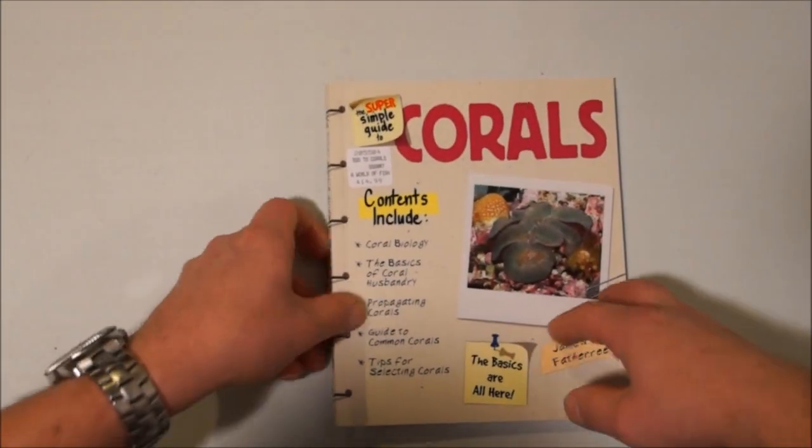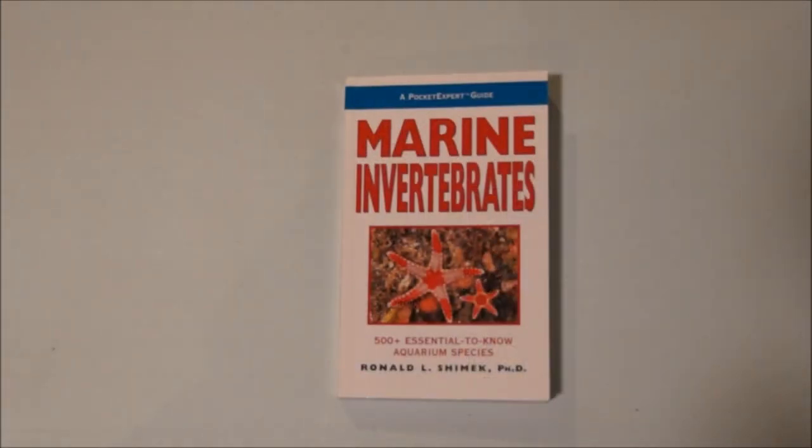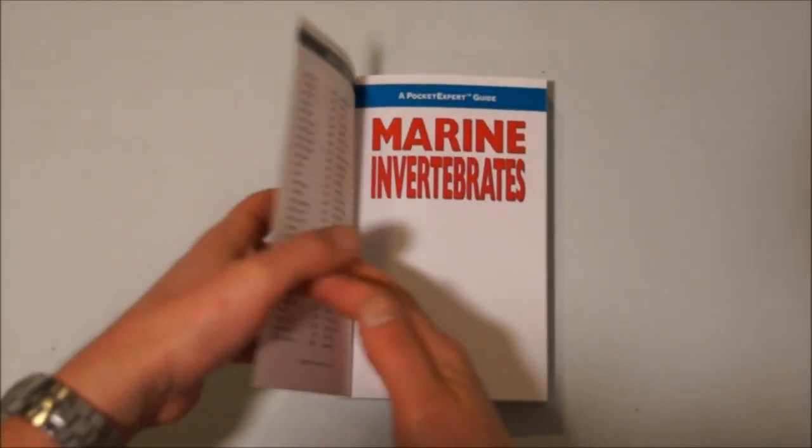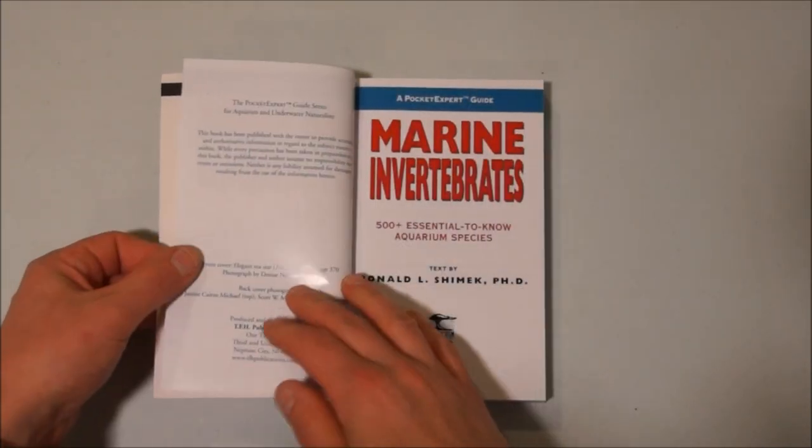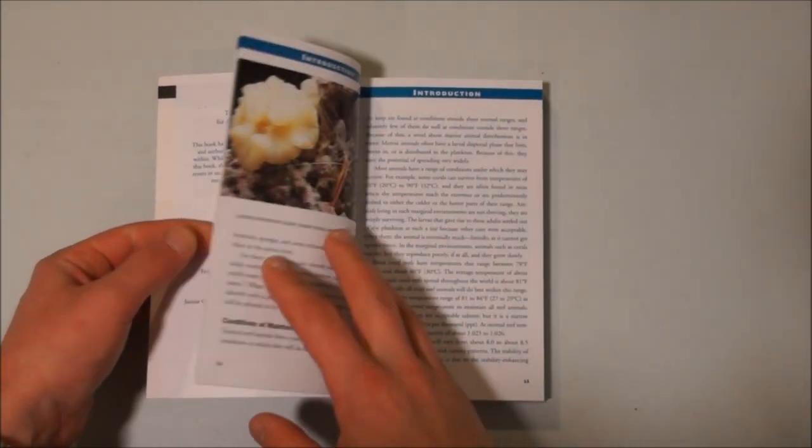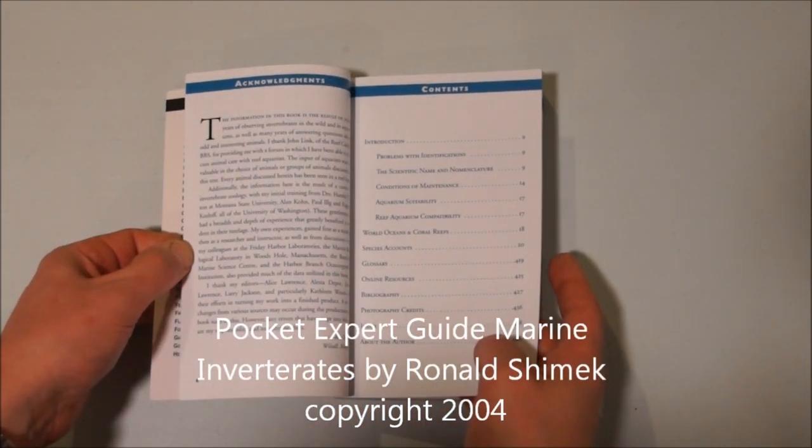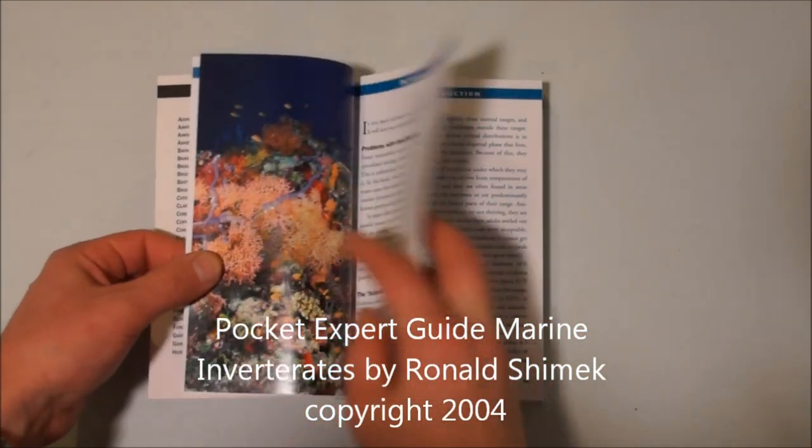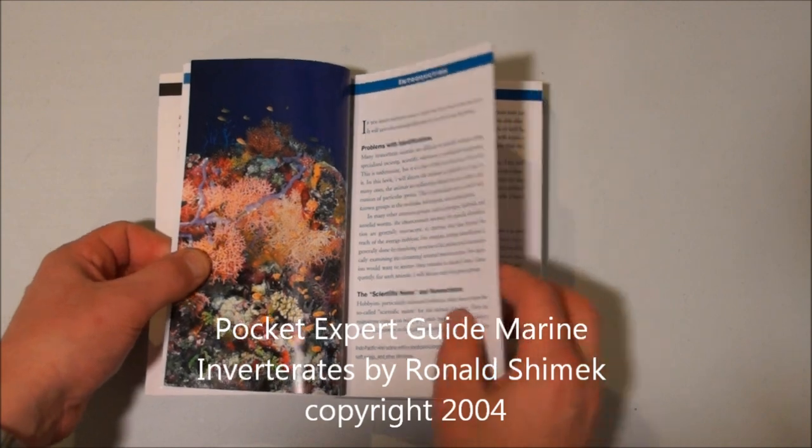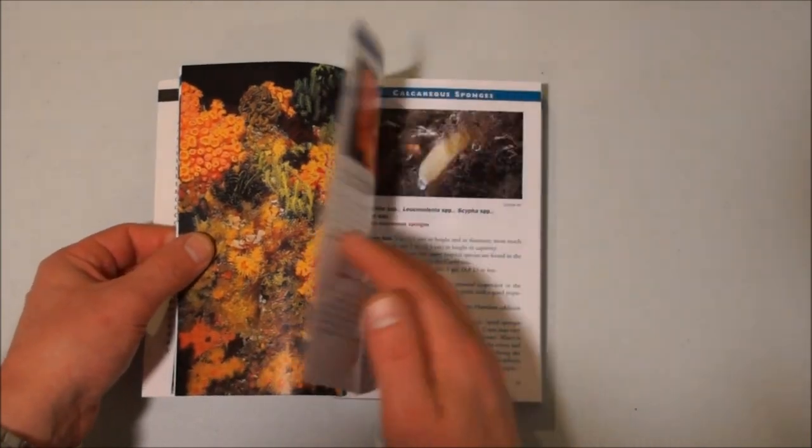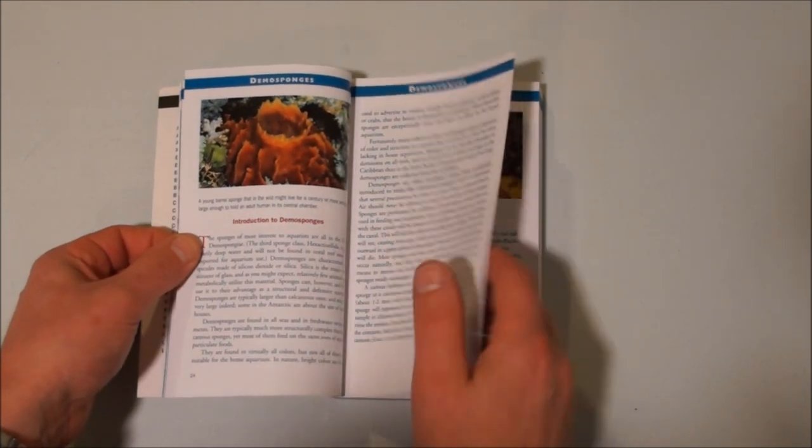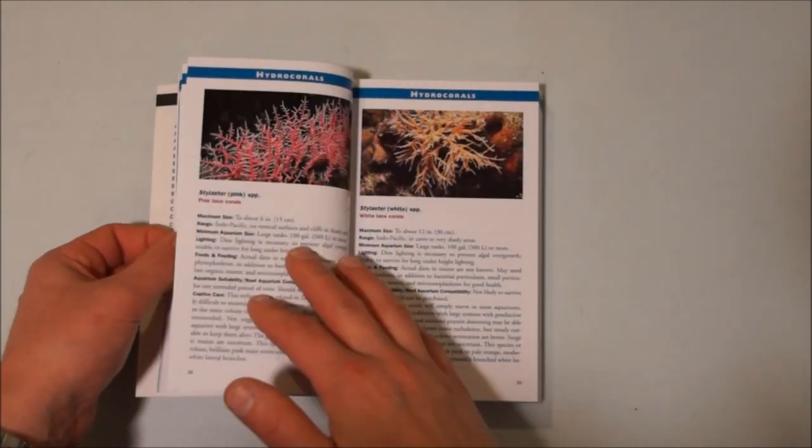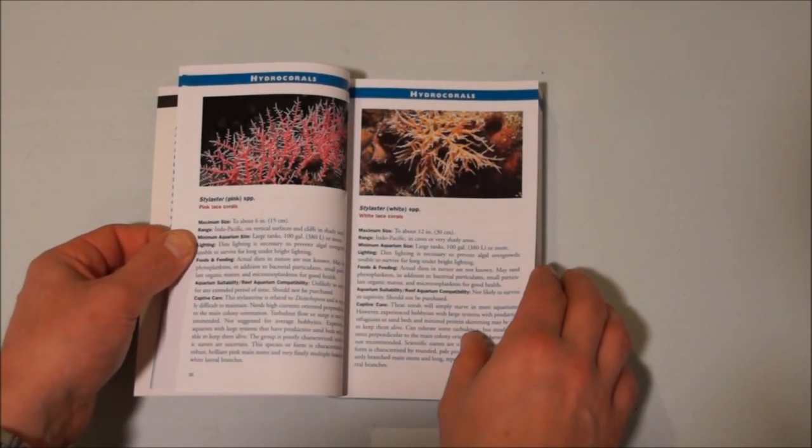The next book I have is Marine Invertebrates. This book written by Ronald, and you know what, more can I say, the guy's got a PhD. It's in the format of a pocket guide, a very thick heavy book with about 450 pages, and it's really well done. The pictures are beautiful, it's pocket size so you can stick it in your back pocket.